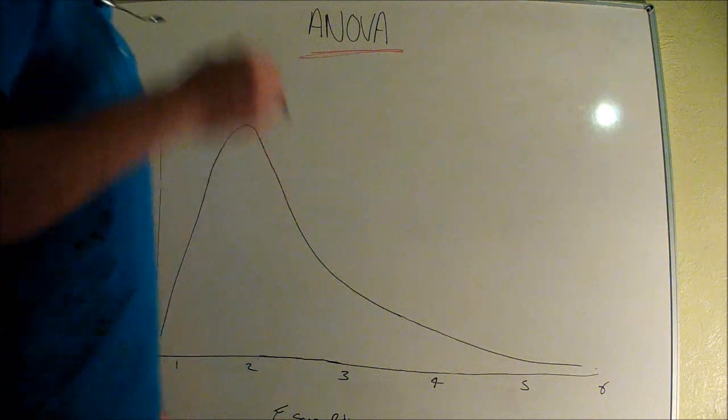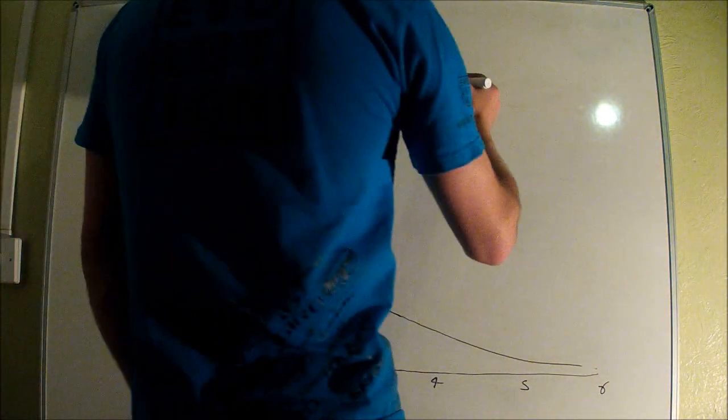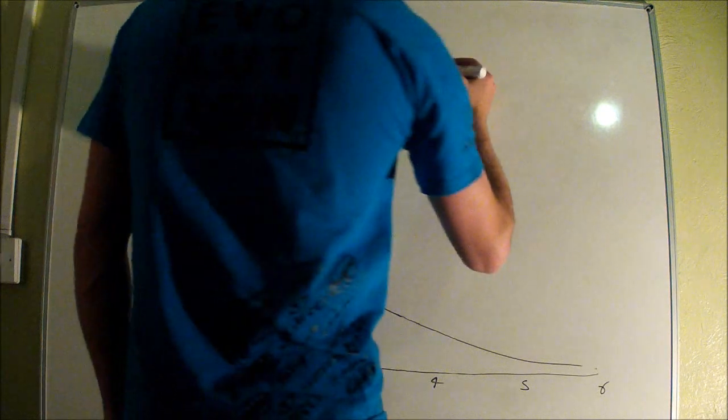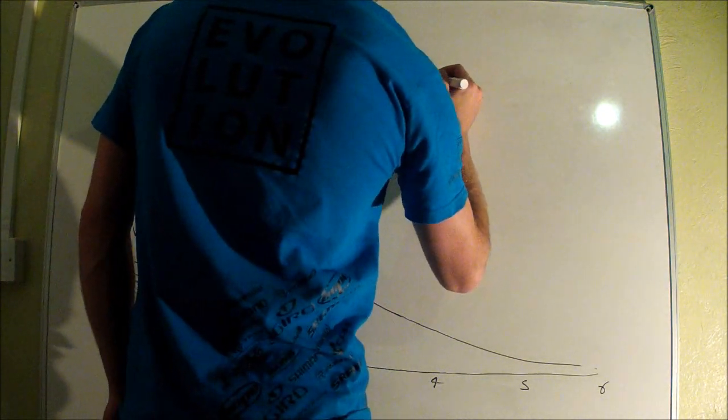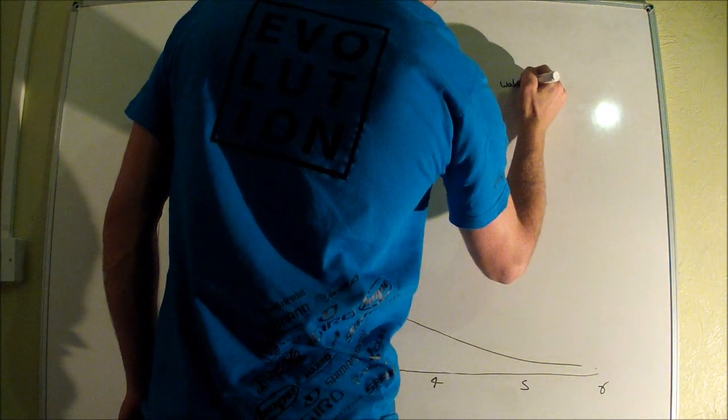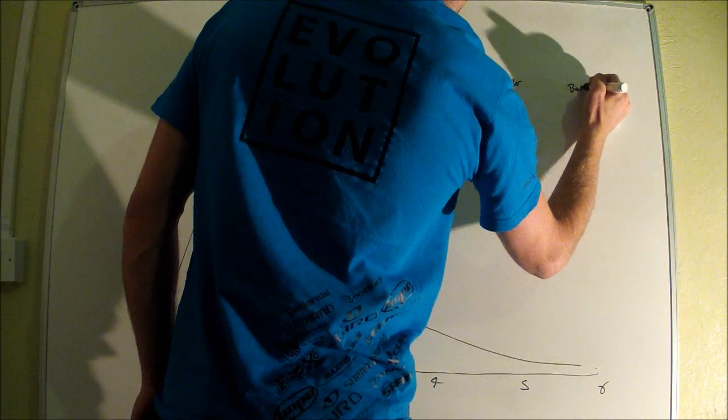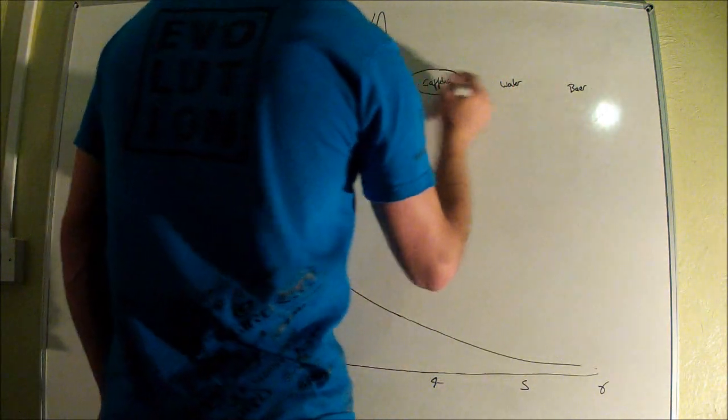If you go to the main workbook page, there's a set of data titled Tiddlywink Performance with three groups, each taking a different supplement. One was taking caffeine, one was taking water, and one was taking beer—those lucky guys.